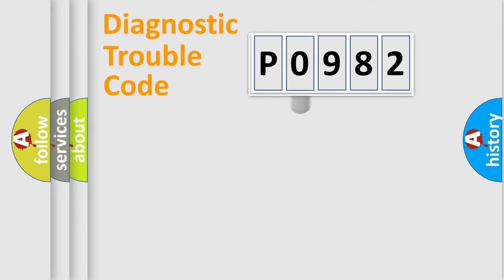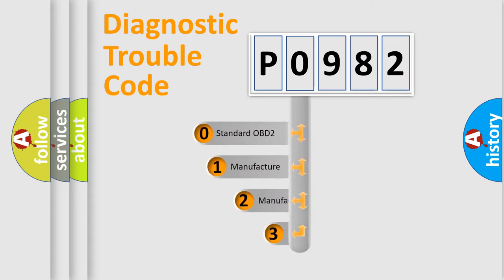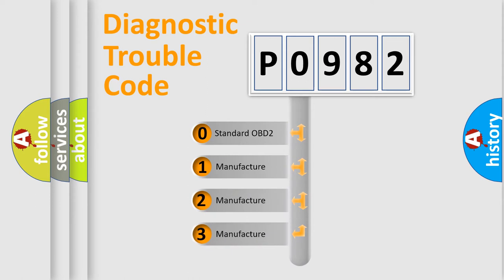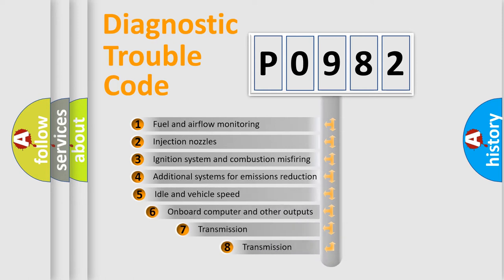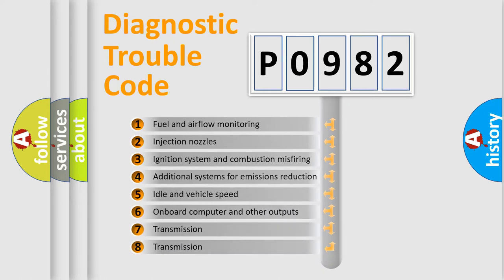This distribution is defined in the first character code. If the second character is expressed as zero, it is a standardized error. In the case of numbers 1, 2, 3, it is a more prestigious expression of the car-specific error. The third character specifies a subset of errors.